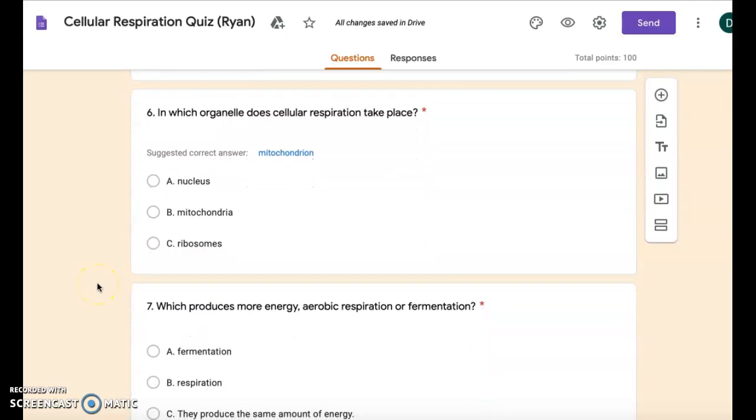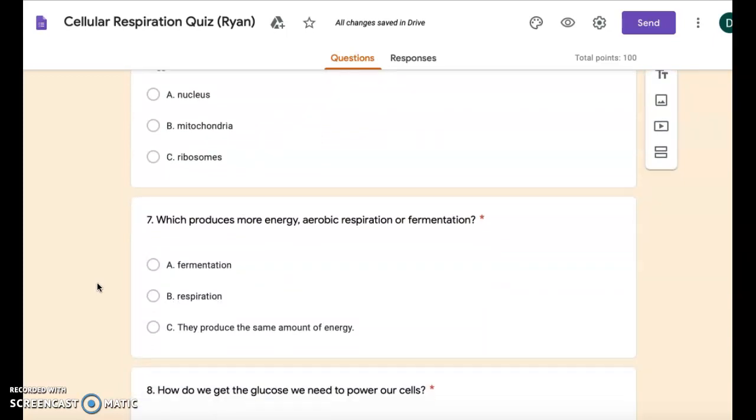Number six: In which organelle does cellular respiration take place? A: nucleus. B: mitochondria. C: ribosomes.